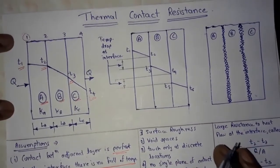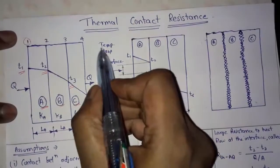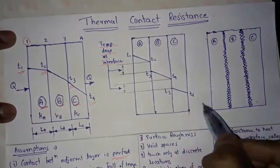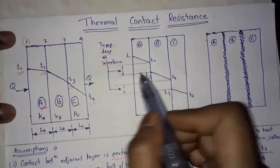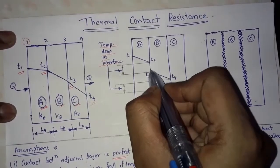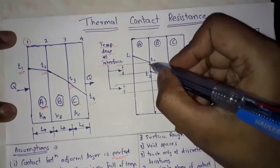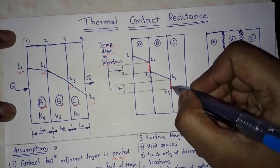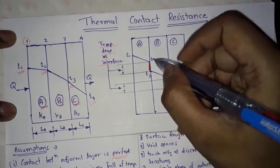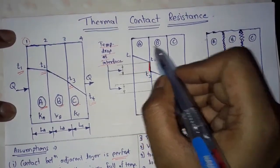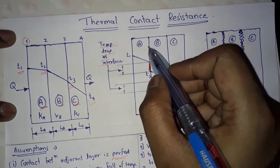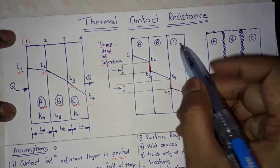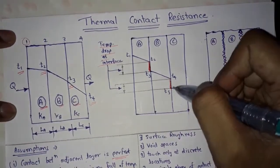In actual practice, there is a temperature drop at the interface, as you can see in this diagram. This temperature drop occurs between walls A and B at this interface, and this temperature drop occurs between walls B and C at this interface.